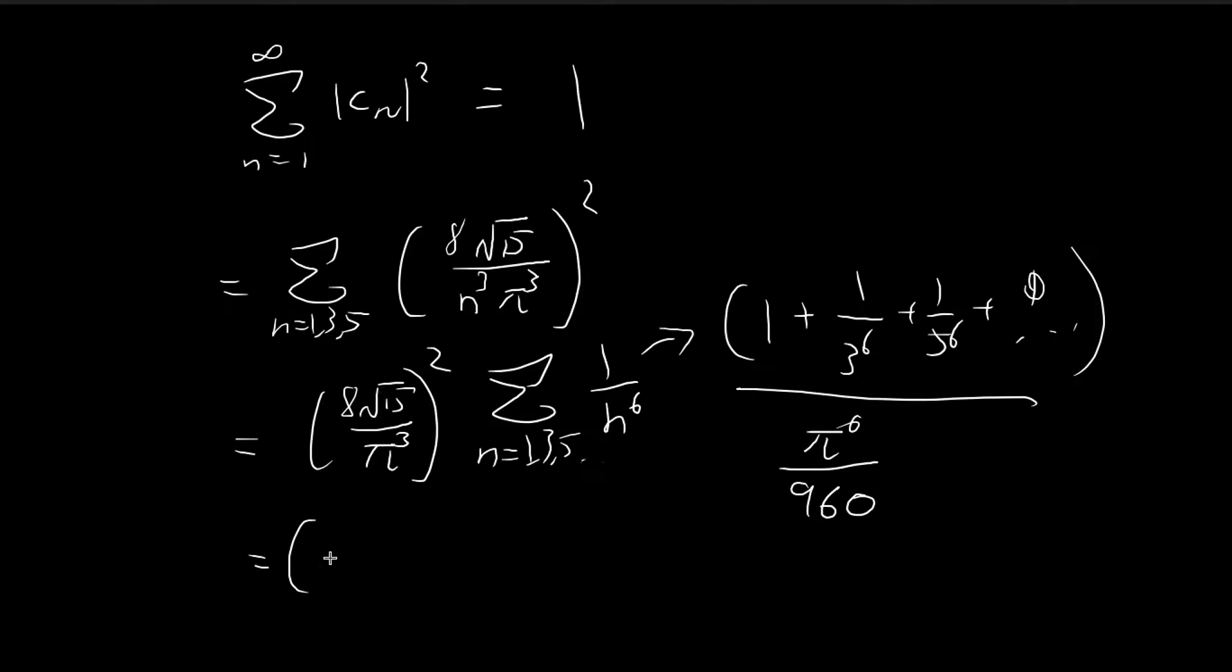So here you have all these constants squared. 8² equals 64, √15 squared is 15, so 64 times 15 equals 960 divided by π⁶. Multiplied by this infinite series π⁶/960, these cancel out. So this equals 1, which verifies this relationship over here.